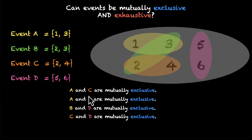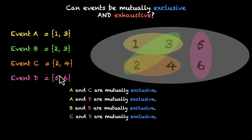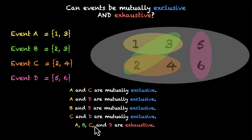So that covers all the pairs of mutually exclusive events. Now let's think about exhaustive events. Are all four of them exhaustive? Yes — all four of them are exhaustive because together they cover the entire sample space. Which means A, B, C, and D combined are exhaustive events.